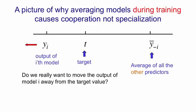But do we really want to move model I in the wrong direction? Intuitively, it seems better to move model I towards the target.